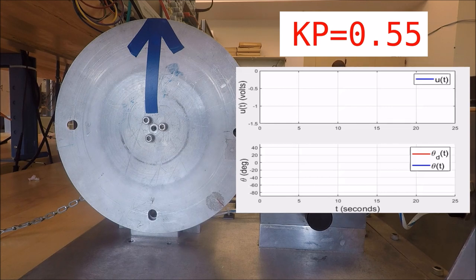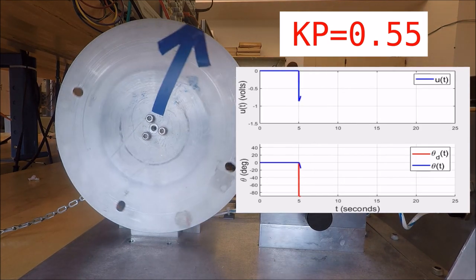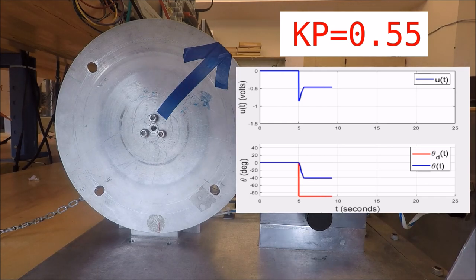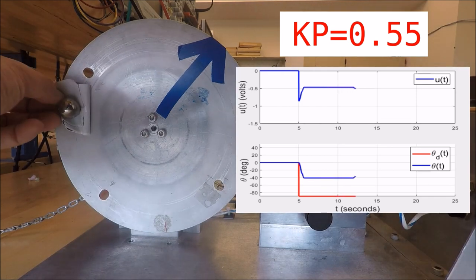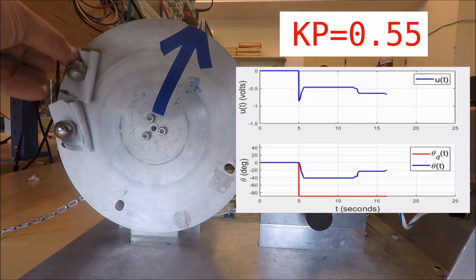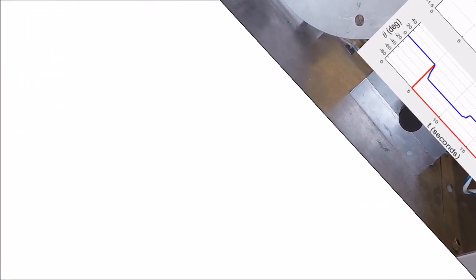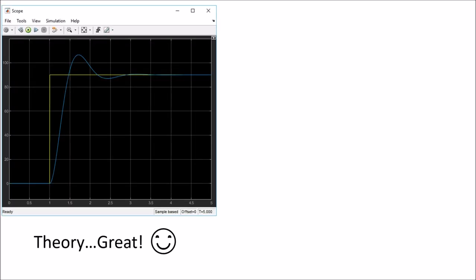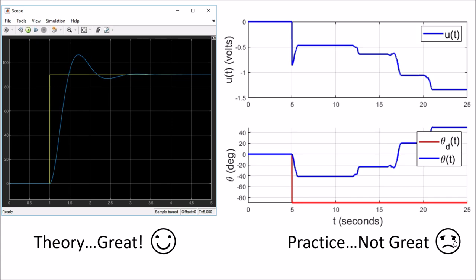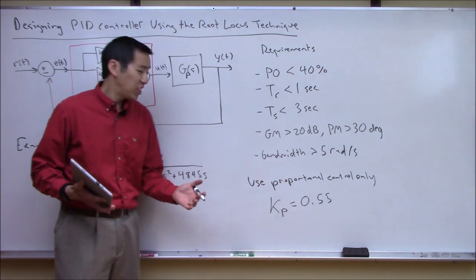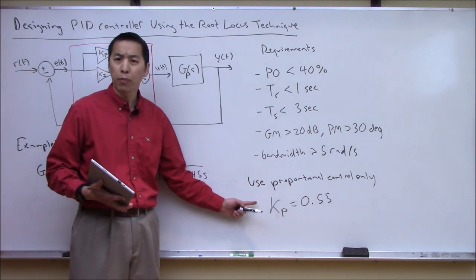But when we try to implement this proportional controller on the real DC motor with a 90-degree step input, the controller fails completely — we only get about 40 degrees of rotation before it gets stuck. The problem gets worse with external disturbances: tapping on ball bearings to apply an approximate constant torque causes the steady-state error to grow. This illustrates the dangers of designing a controller based on a linear model that doesn't capture real friction.